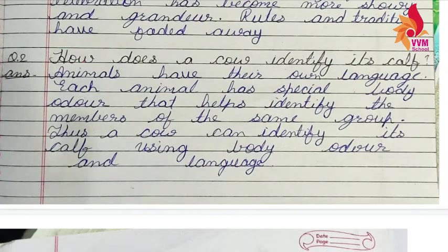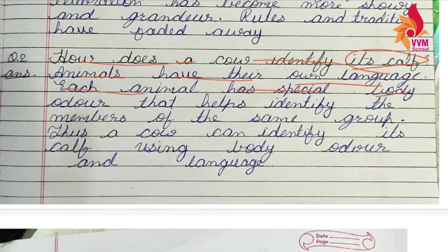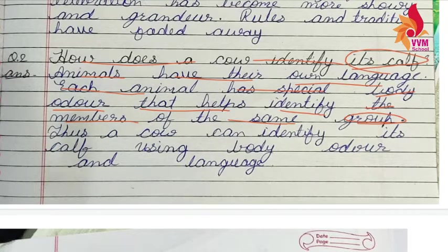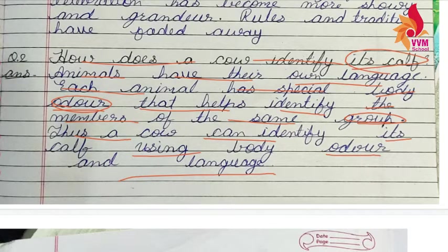Next we have: how does a cow identify its calf? Animals have their own language. Each animal has a special body odor that helps identify the members of the same group. The smell helps them recognize animals of their own group. A cow can identify its calf using body odor and language.